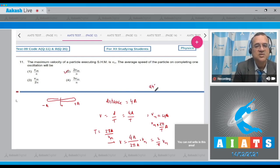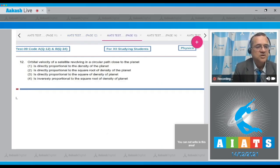Question number 12: The orbital velocity of a satellite revolving in a circular path close to the planet is - four options. Dependent on the density. Very close to this one, V is equal to GM divided by r root, and in terms of density the mass will be 4 by 3 pi r cube into rho.